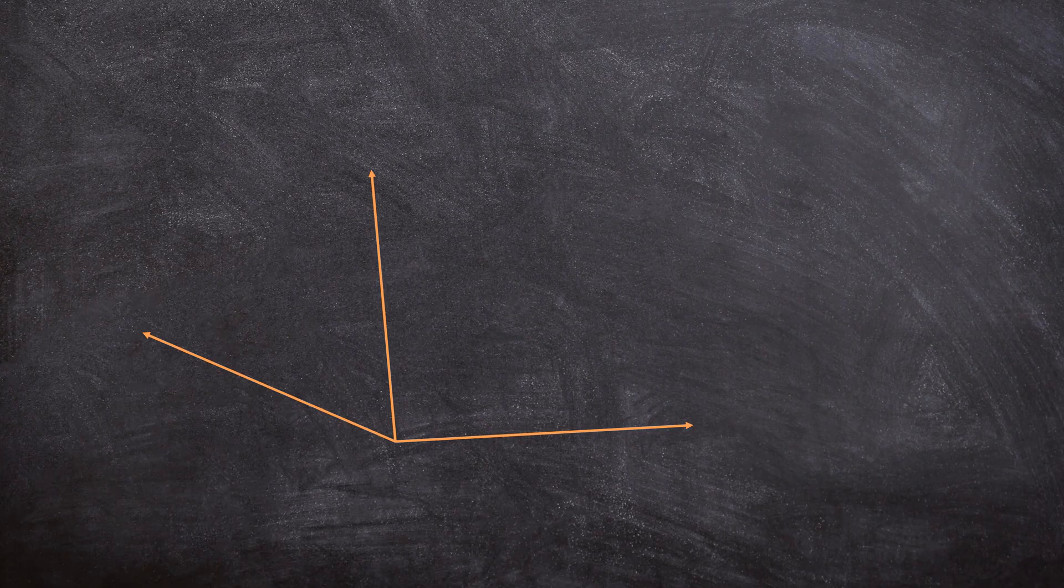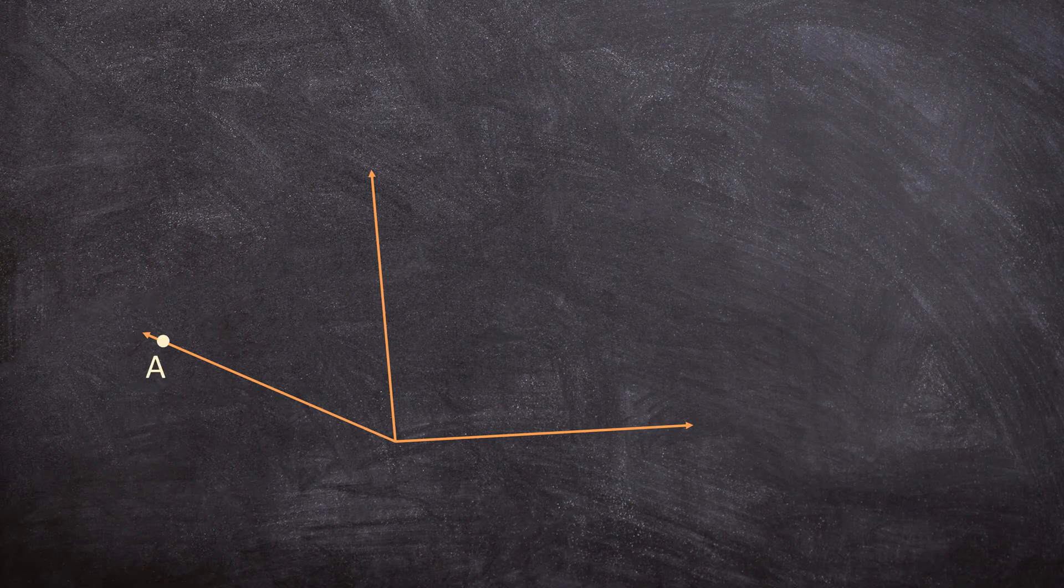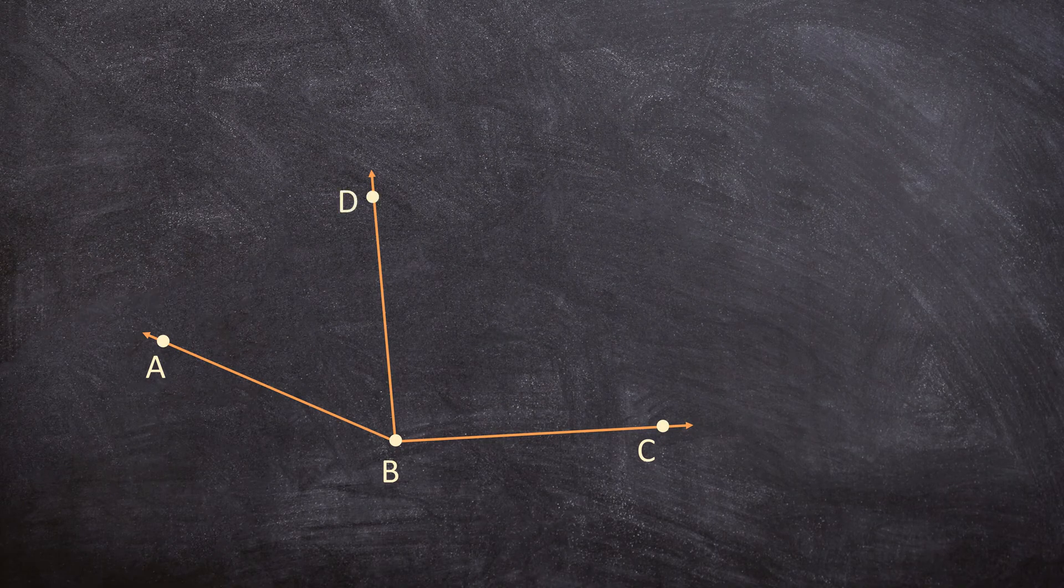But let's look at this example. Here you have three rays with the same endpoint. We have ray AB, ray BC and ray DB.